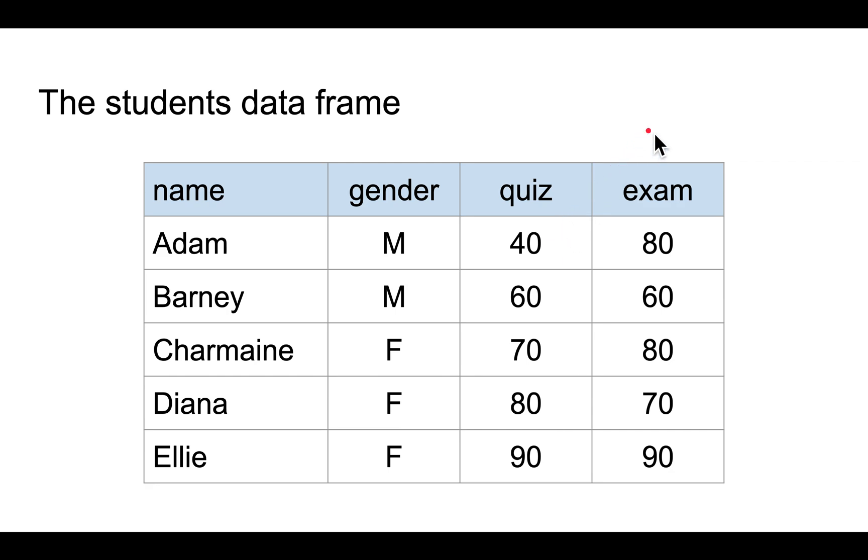So let's work with this data frame, which is pretty small and simple, so it's easy to illustrate what's going on. We have five students and four variables or columns.